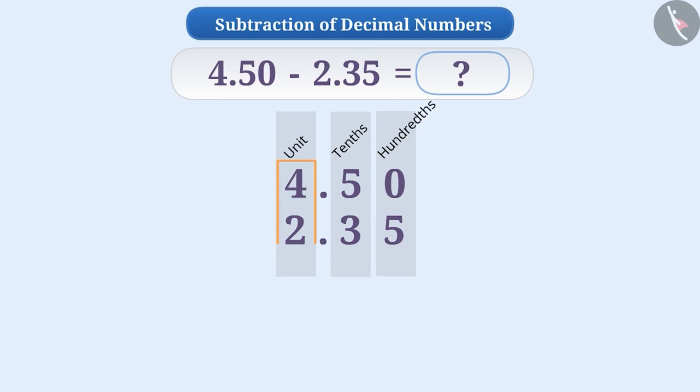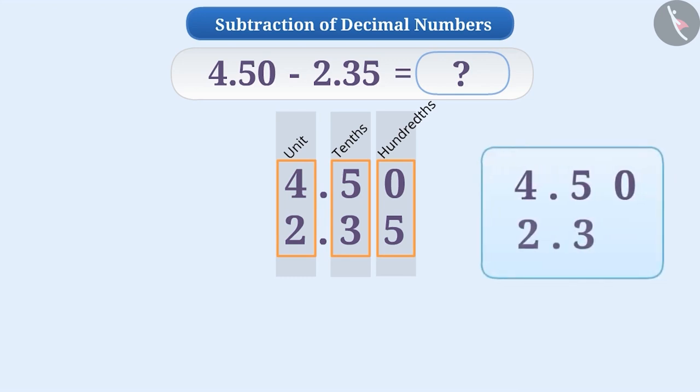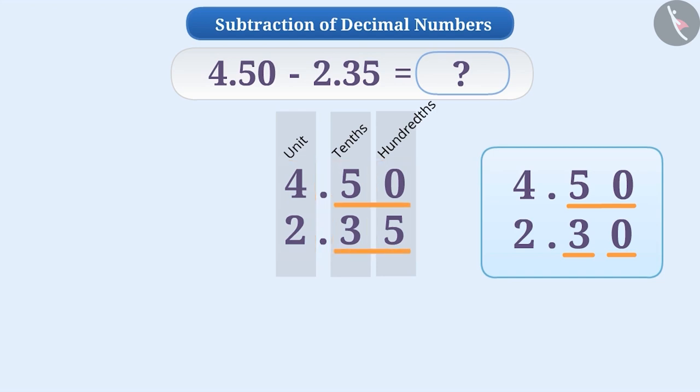That's why we will write the units 4 and 2 in the same column, the tenths 5 and 3 in the same column. Similarly, we will write the hundredths 0 and 5 in the same column. In some cases, the number of digits after the decimal point might not be equal. What do we do in such cases? Think for a while. You got it right. We need to put 0 at the empty place and make the number of digits equal. Since the number of digits in both of these numbers is the same, we don't need to do so.